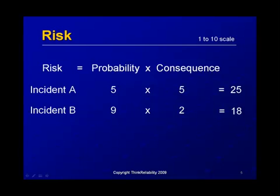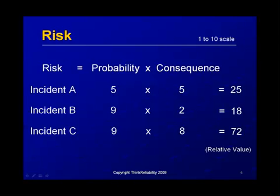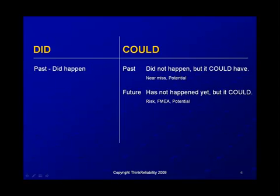For example, using a 1-to-10 scale, an incident with a probability of 5 and a consequence of 5 gives a risk number of 25. Another incident could have a higher probability but a lower consequence, giving a slightly lower relative risk. Incident C, with higher probability and higher consequence, gives a number of 72. There's nothing special about 72 or 25 — it's a relative value indicating that incident C has higher risk than A or B. The scale is subjective, but it's at least a relative indicator from one incident to the next.